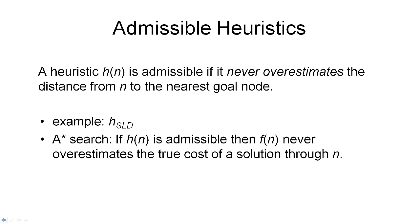A heuristic is called admissible if it never overestimates the distance from a node to the nearest goal node. So what this means is that the value of the function h must always be less or equal than the actual distance to the nearest goal node. The equality is actually quite important.